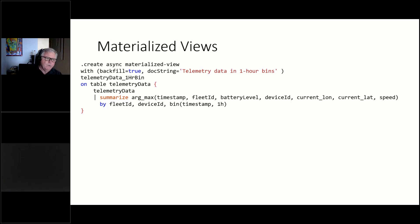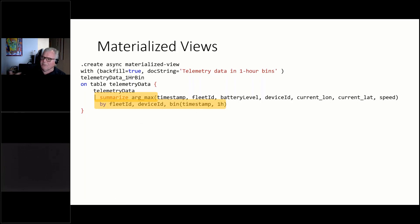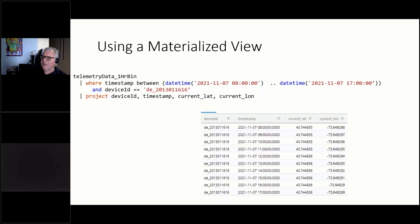The way we addressed this was to create a materialized view. A materialized view in KQL is a lot like a view in SQL Server, but it's actually persisted to disk. Every time I insert a row into the telemetry data table, this view will be updated. The view is called telemetry_data_one_hour_bin, and it's based on a query that summarizes by one-hour timestamps. Now I've got summary data — if I query this view it might be a lot faster. You query a materialized view just like you query a table: same filtering, same projecting of columns. KQL treats it just like a table.